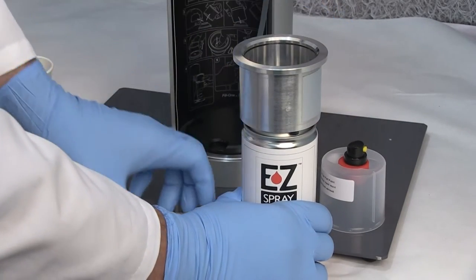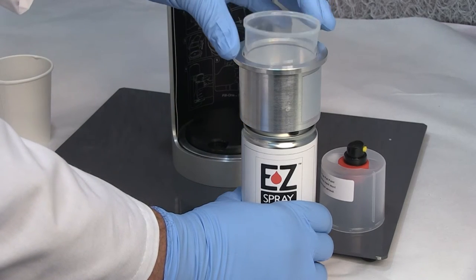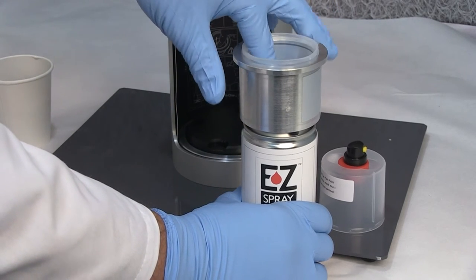Insert the metal cylinder cup on the can's filling head. Then insert the plastic filling cup inside the metal cylinder cup.